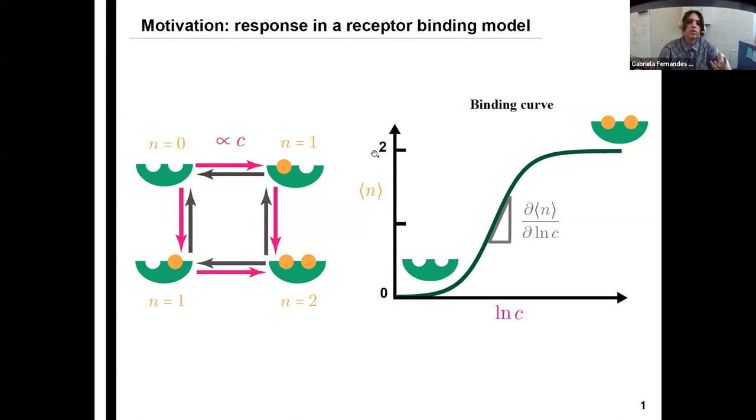The binding rates are proportional to the concentration of ligands in the environment. So if we're interested in characterizing the system, we can look at binding curves, which gives us what's the average concentration of bound ligands in the receptor as a function of the concentration of ligands in the environment. So we see a switch-like behavior where for low concentrations, in average, there are no ligands in the receptor, and for high concentrations, all the binding sites are occupied. So if we look at the steepness of this curve, which is given by the response of the average of the ligand occupation number in respect to changes, logarithmic changes in concentration, we can study how sensitive the system is to changes in concentration.